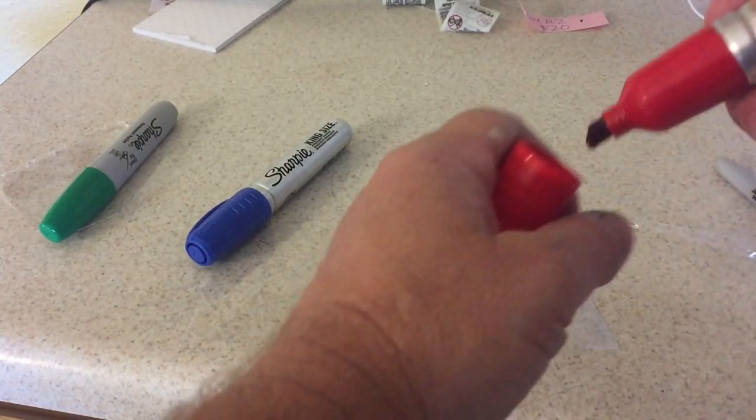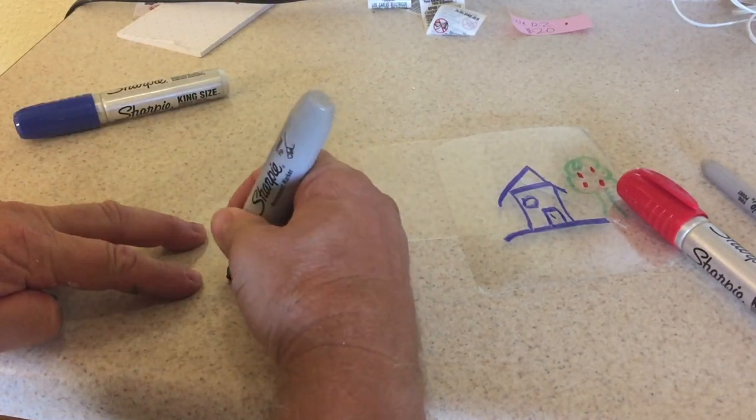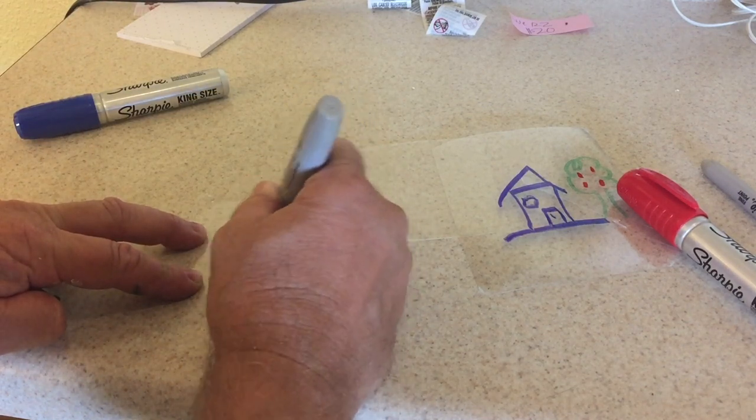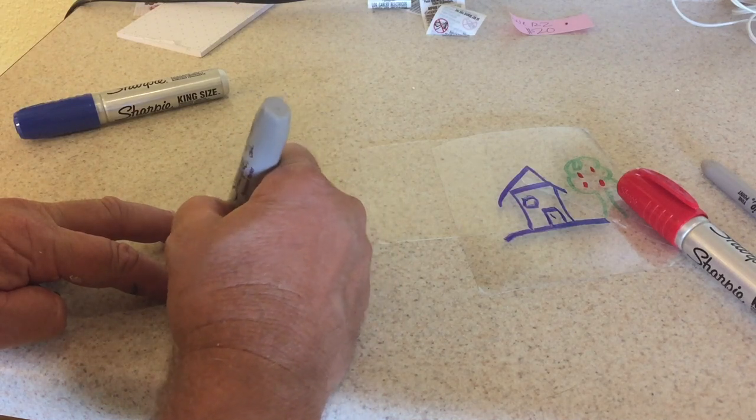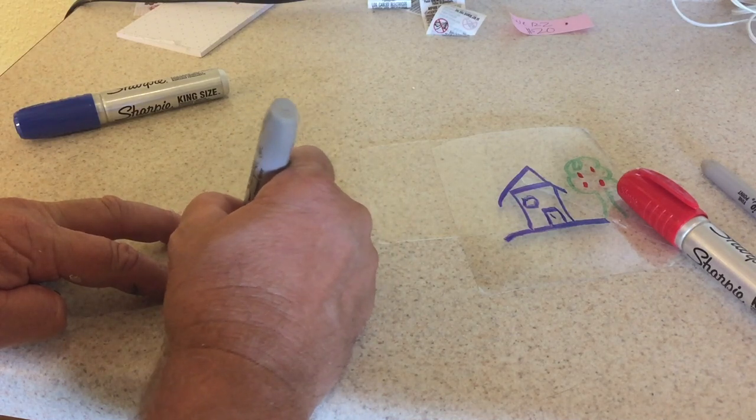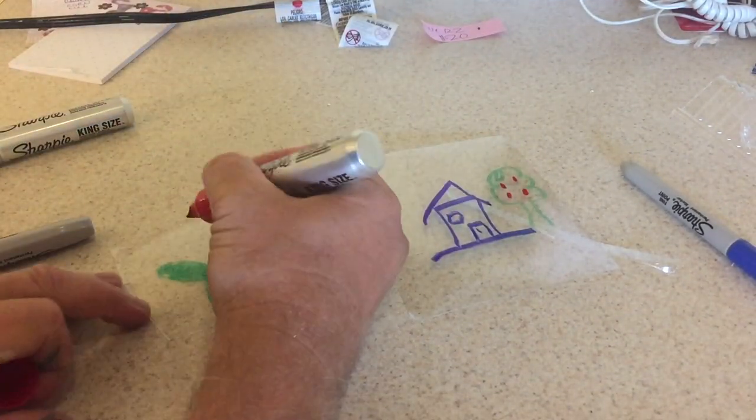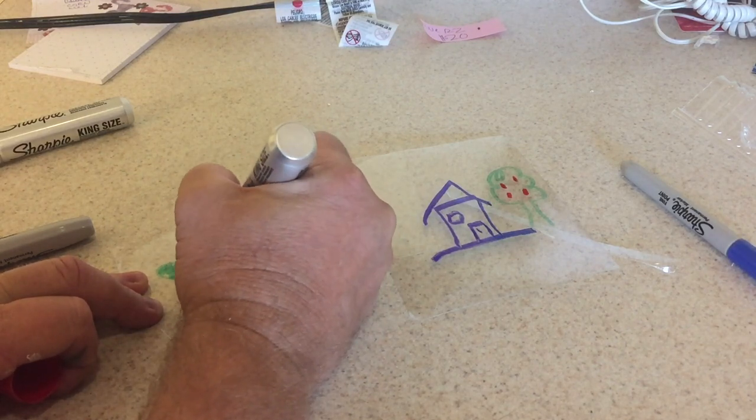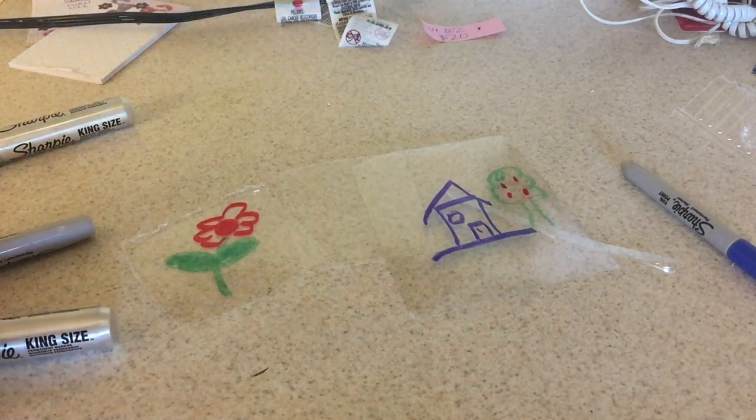And then I'm going to make a second design, a flower. You can go ahead and use different colors, whatever you want, but just make sure it's a permanent marker. Once I get done with my flower, I'm going to make the last one, which is going to be Kids Fun Science, my favorite YouTube channel. Once I get those all set up, we're going to put it onto a cookie sheet.